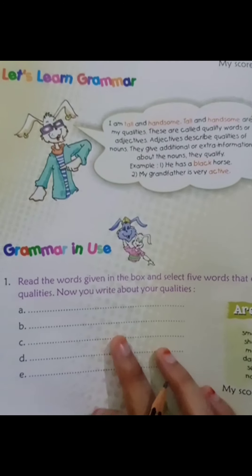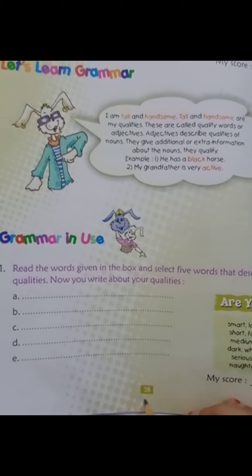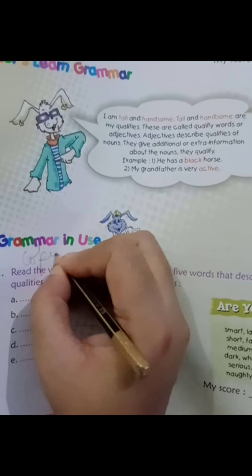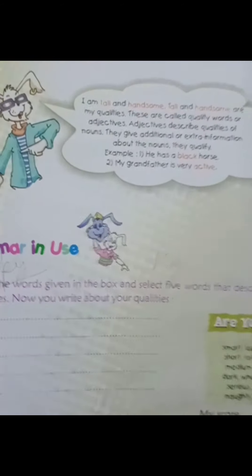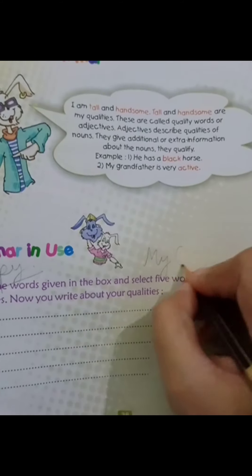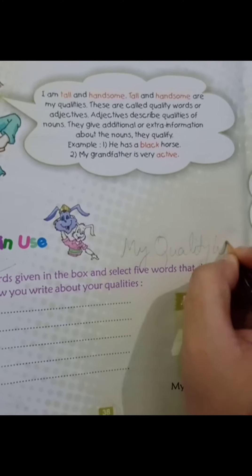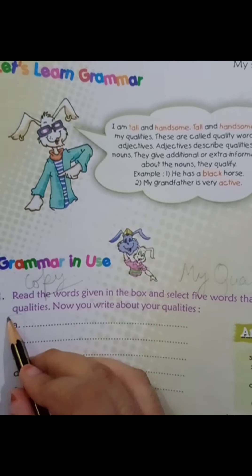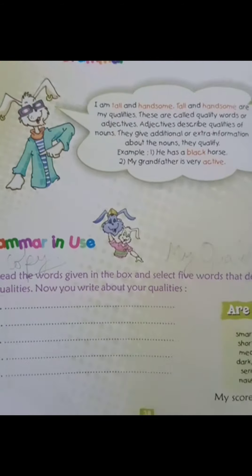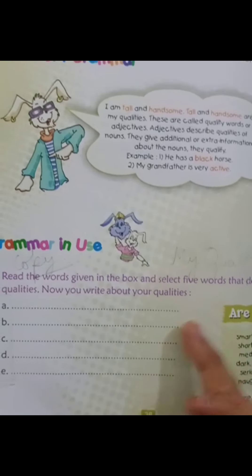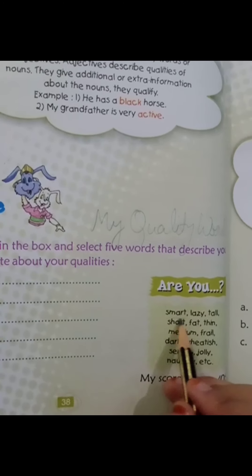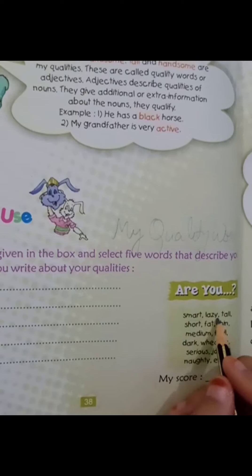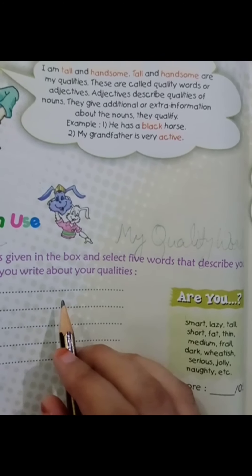Now the next exercise. Page number 38 — you will do this in your notebook. The exercise name is 'My Quality Words.' Here you will write five quality words which are your adjectives — words related to your own qualities. You can write words like 'smart' or 'lazy' if that describes you.